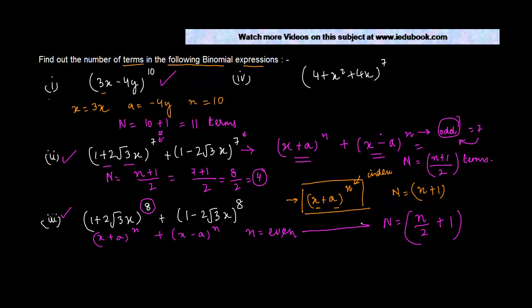And as I explained to you, if n is even, then the number of terms capital N is equal to n by 2 plus 1. So what's the value of small n here? Small n is equal to 8 in this case. Therefore, the capital N becomes n by 2 or 8 divided by 2 plus 1, which is nothing but 4 plus 1 is equal to 5.